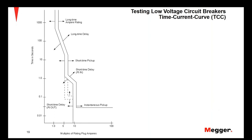Whenever we talk about primary injection testing, it's very important to understand how time current curves apply to both pickup and time delay values. Low voltage circuit breakers have different trip functions that provide different protective elements based on current level and operating parameters. These functions are typically found as long time, short time, instantaneous, and ground fault.